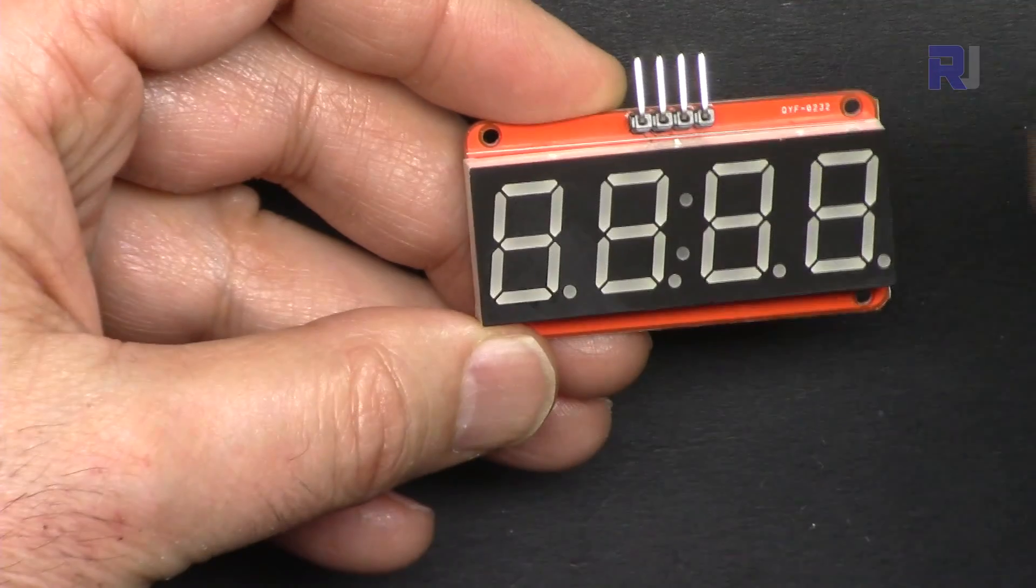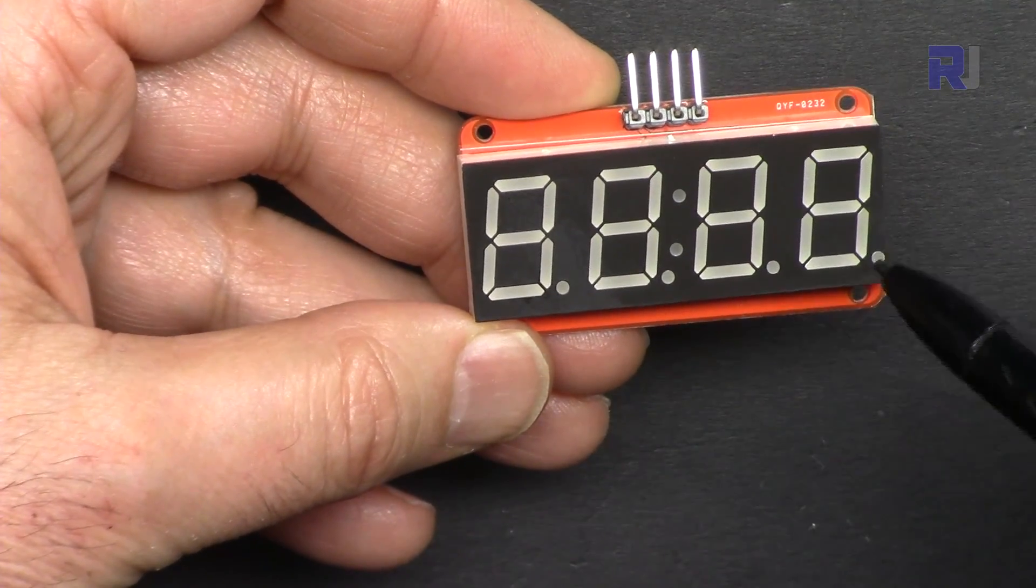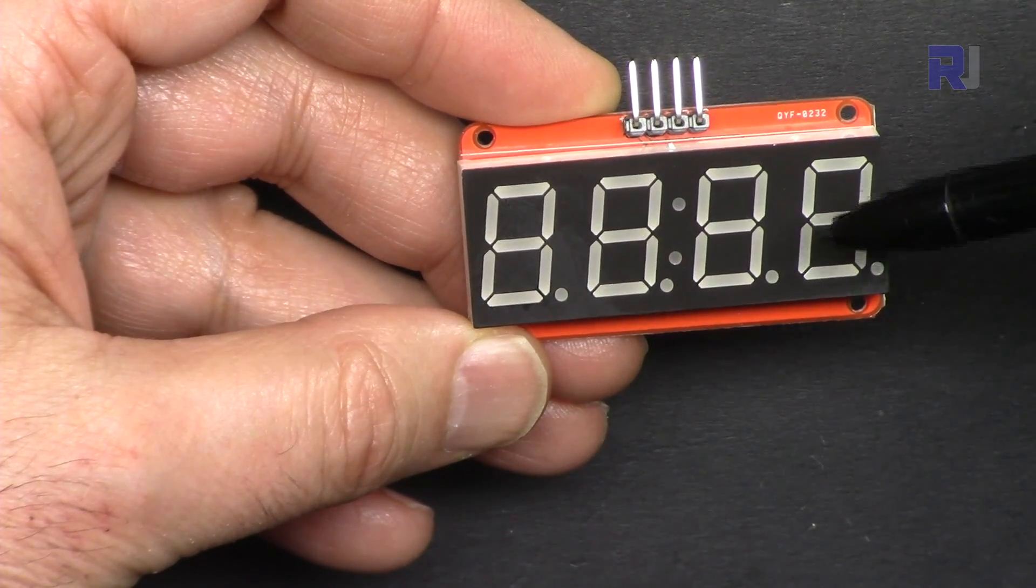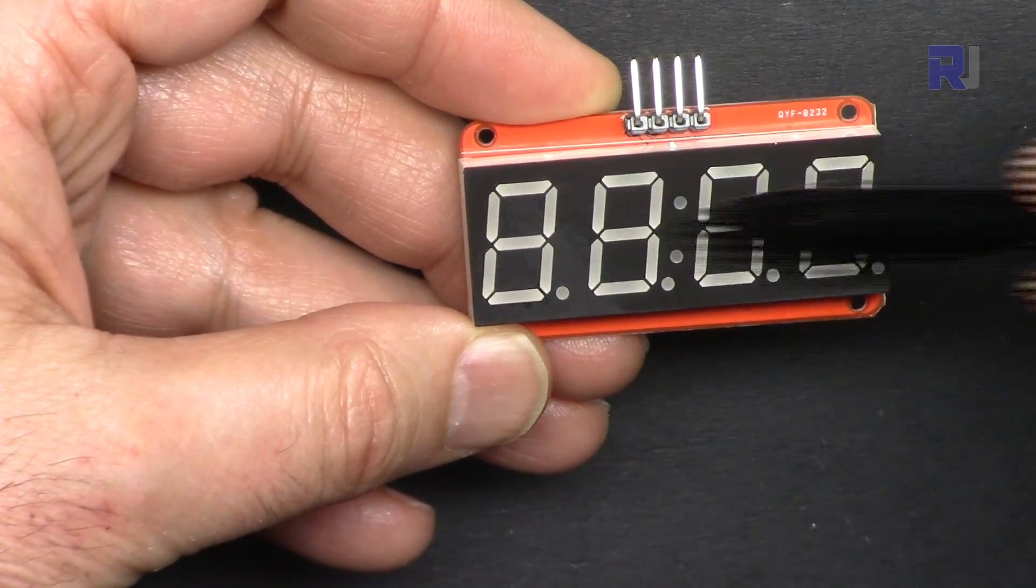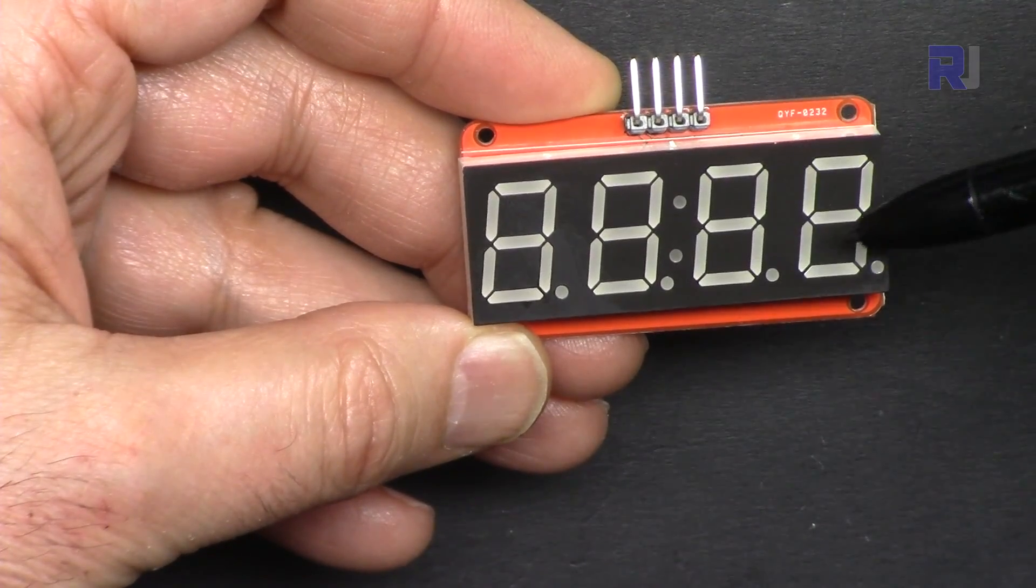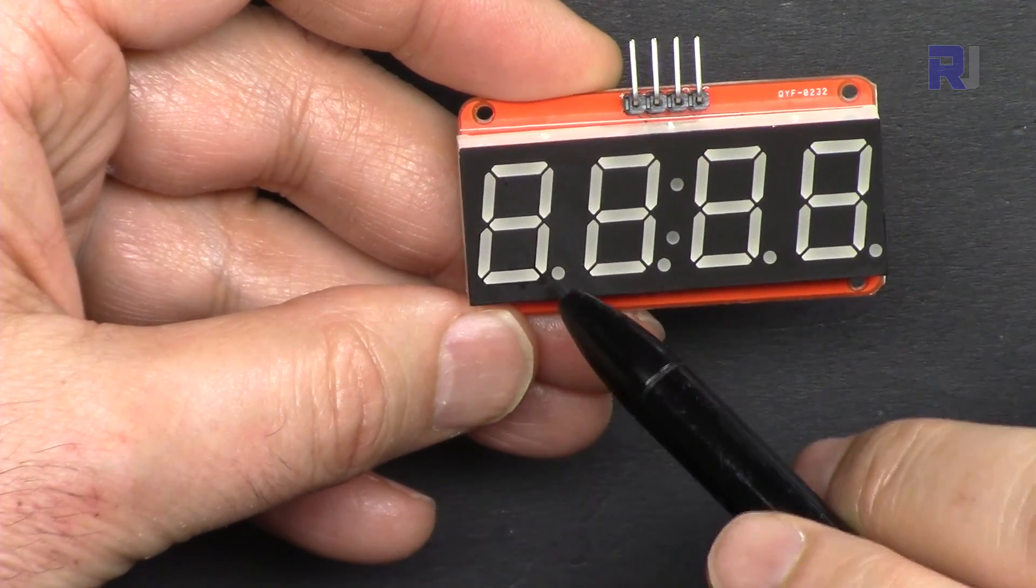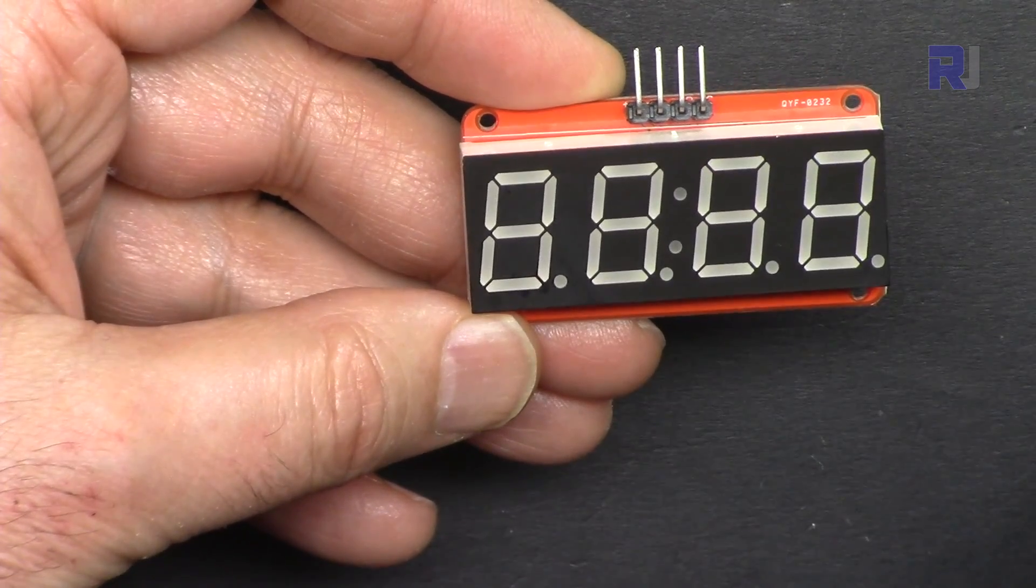This is 0.56 inch in terms of length of the digits. As you can see, we have a colon and we have decimal points. From the library or code you can turn the colon on and make this a clock. You send hour and minute. If you want to display decimal points for voltage with floating numbers, any of these decimal points can be turned on and off at any moment that you want.